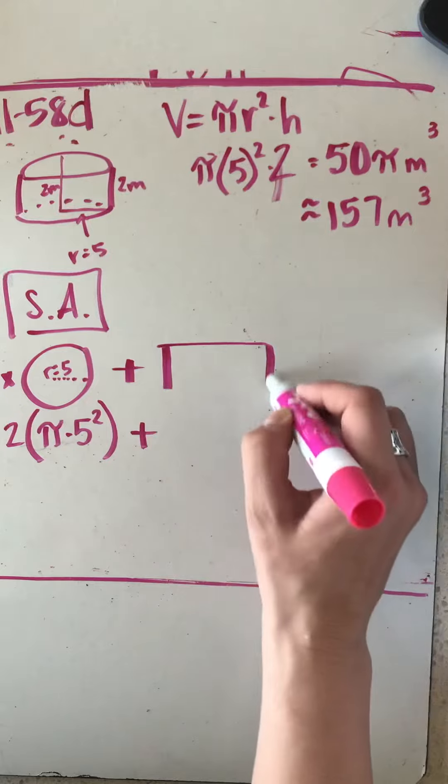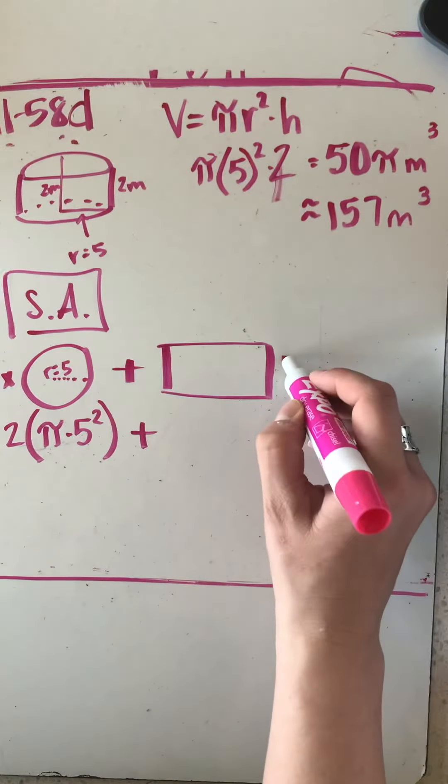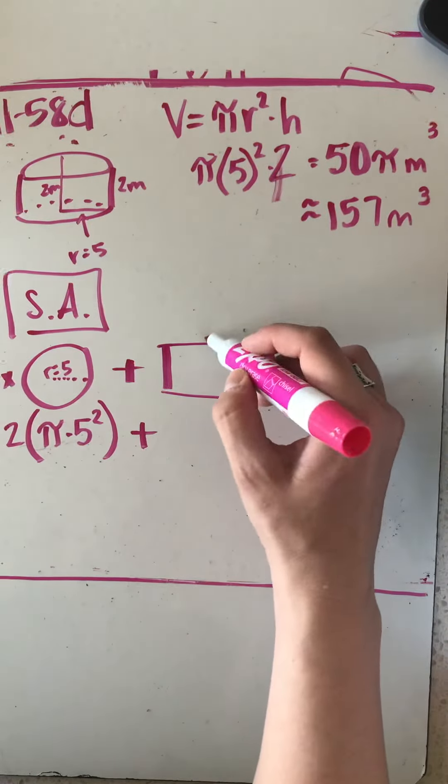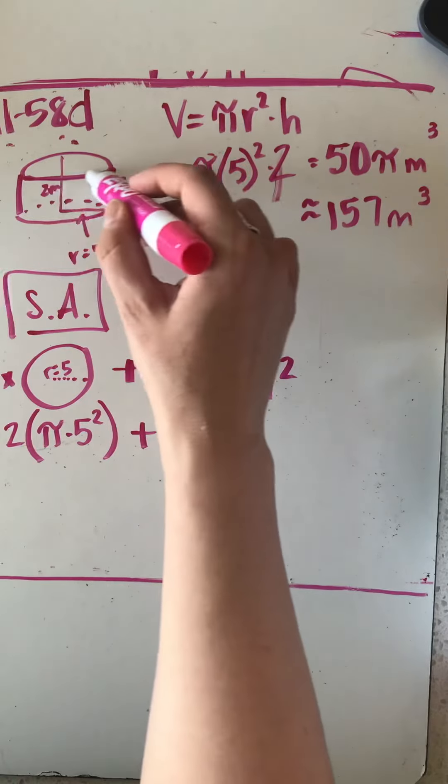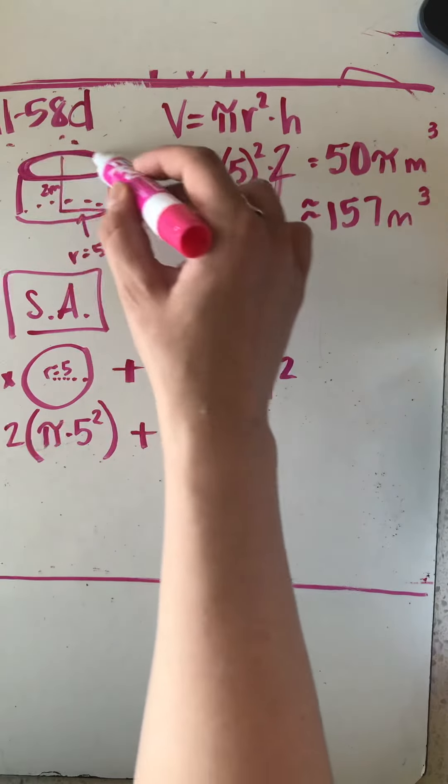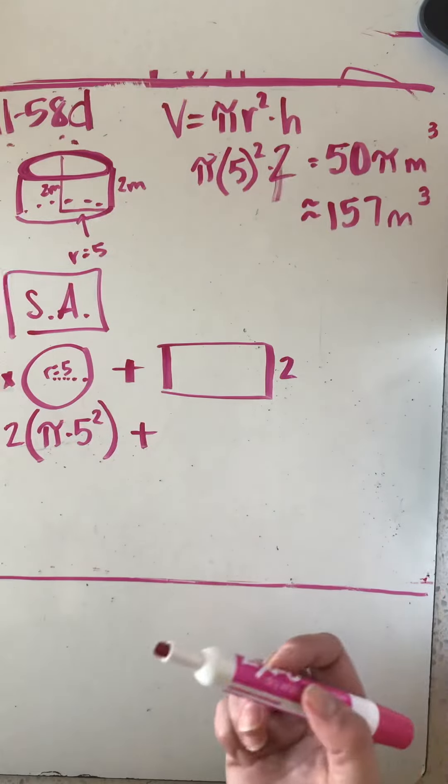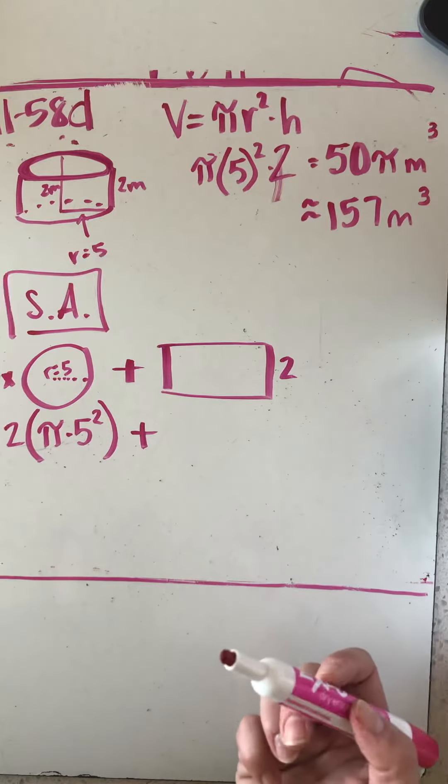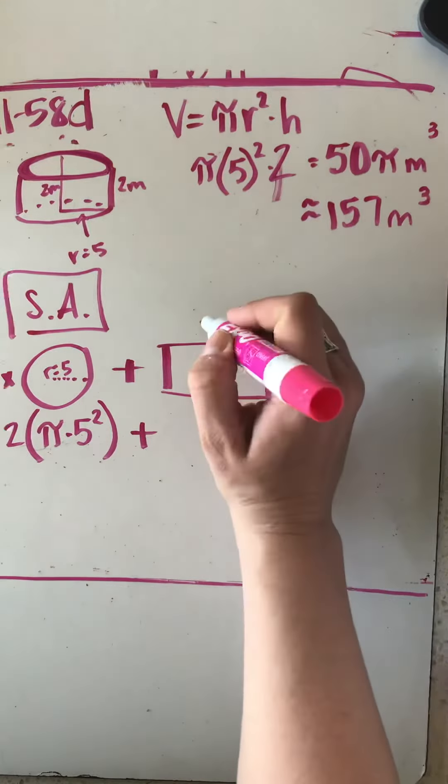It's going to create a rectangle, still going to have a height of 2, but my length is this right here. Well, what's that called? It's the circumference of the base. Circumference we can figure out by doing 2πr.